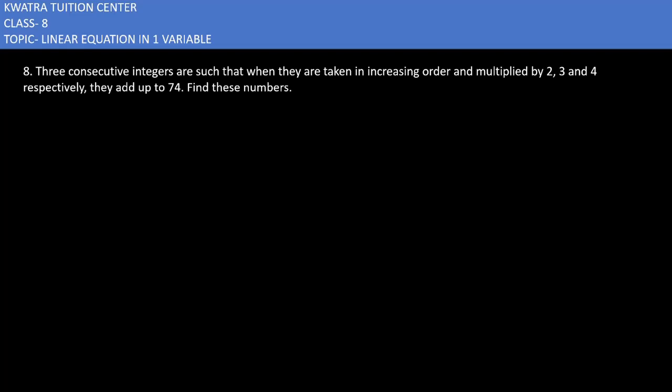Let's start with the 8th one. It says three consecutive integers are such that when they are taken in increasing order and multiplied by 2, 3, and 4 respectively, they add up to 74. Find these numbers.